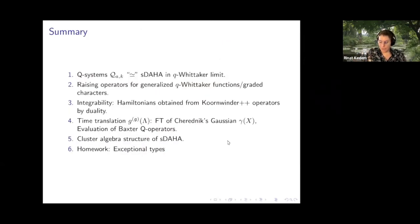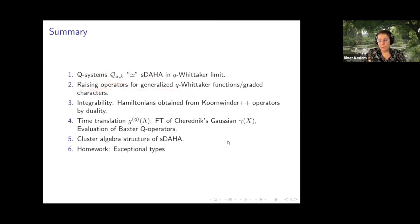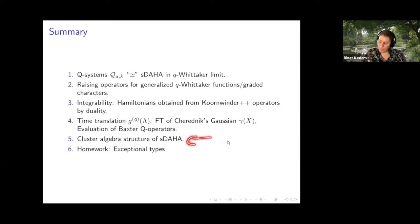Summary: quantum Q systems essentially correspond to the spherical DAHA in the Q-Whittaker limit. The raising operators Q_{A,K} generate generalized Q-Whittaker functions, which are the graded characters. The quantum Q systems are integrable and related to quantum relativistic Toda Hamiltonians with boundary terms. The evaluation of the Baxter Q operator gives the time translation or Dehn twist. There is upcoming work on the cluster algebra structure of the full spherical DAHA, and the homework is to repeat all of this for exceptional types.